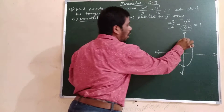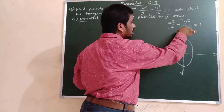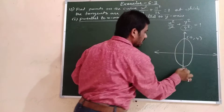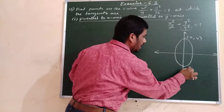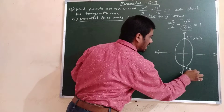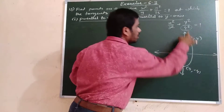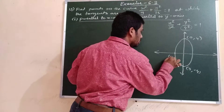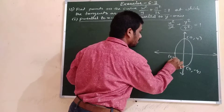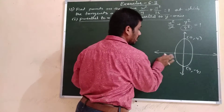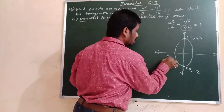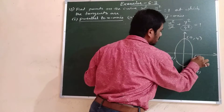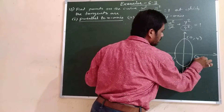The key points on this ellipse are: (0, 4), (0, -4) on the y-axis, and (3, 0), (-3, 0) on the x-axis.